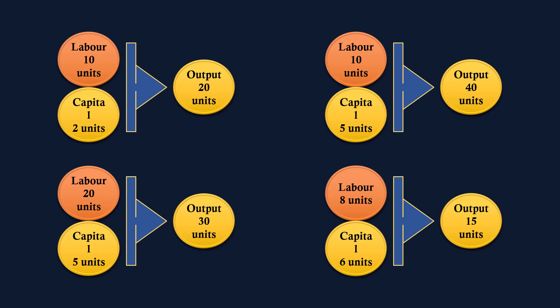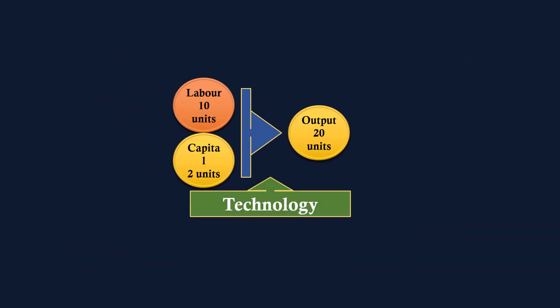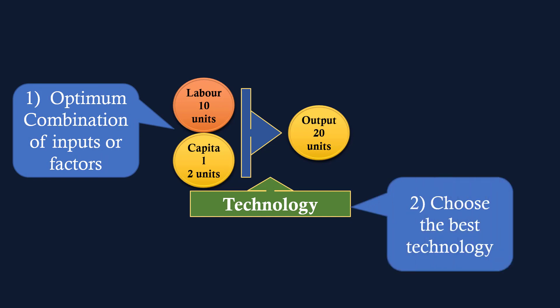One speciality about this function is that it is different from all other functions in economics. The relation between inputs and output is to be viewed along with the technique of production, or method of production, or technology. A producer has to perform two things in using production function: first, he has to arrive at the optimum combination of inputs; and second, he must choose the best technology that suits him.